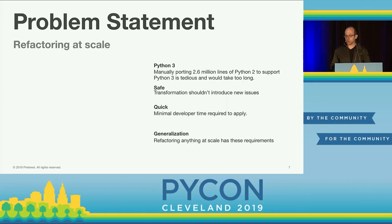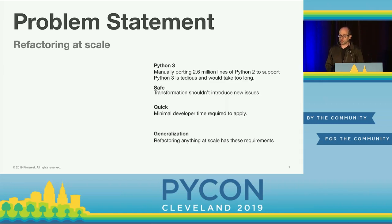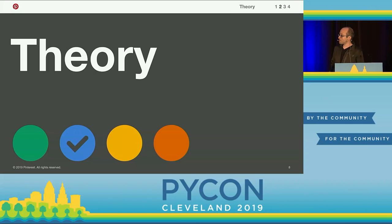Safe means it doesn't introduce any new issues — if you make a transformation, you don't want to hunt down new bugs you caused. Quick here is more about developer time than runtime: if you need to apply something across 2.6 million lines, anything that takes five times as long becomes a very long time. In general, refactoring anything at scale requires something that is safe and quick.